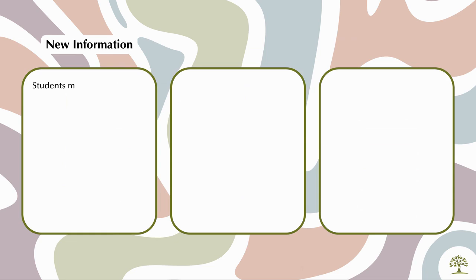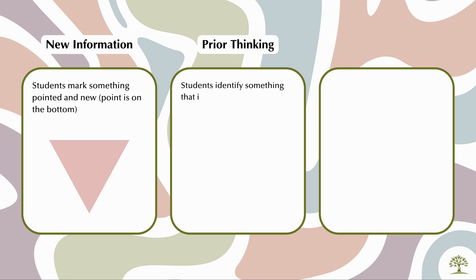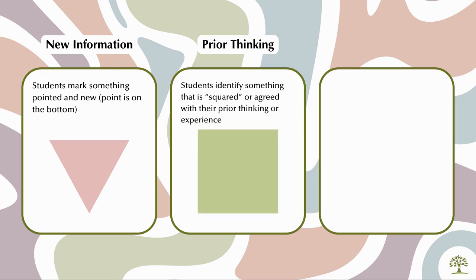First, the triangle, with its point at the bottom, represents something new and pointed — an insight that sharpens understanding or challenges existing perspectives. The square is for concepts that are squared with prior knowledge, ideas that resonate with what students already knew or believed.